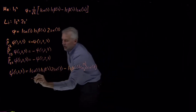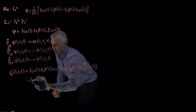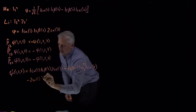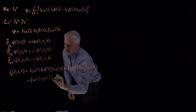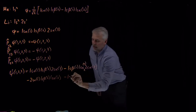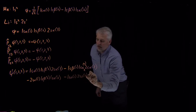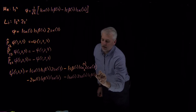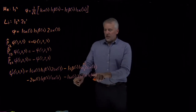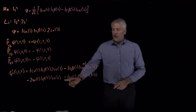Likewise, I can include a negative term where I've exchanged electrons 1 and 3, which looks like 2s alpha for electron 1, 1s beta for electron 2, 1s alpha for electron 3. And the 2,3 exchange looks like 1s alpha for electron 1, 2s alpha for electron 2, 1s beta for electron 3. Each of these terms is a particular exchange of the first term, and they've all shown up with a negative sign.